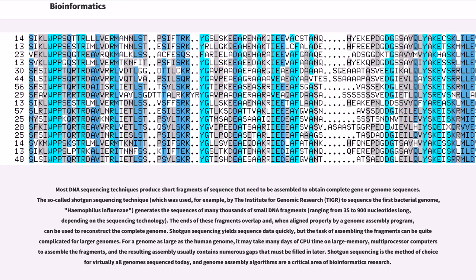Shotgun sequencing yields sequence data quickly, but the task of assembling the fragments can be quite complicated for larger genomes. For a genome as large as the human genome, it may take many days of CPU time on large memory, multi-processor computers to assemble the fragments, and the resulting assembly usually contains numerous gaps that must be filled in later. Shotgun sequencing is the method of choice for virtually all genomes sequenced today, and genome assembly algorithms are a critical area of bioinformatics research.